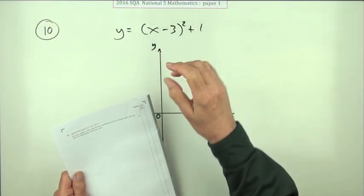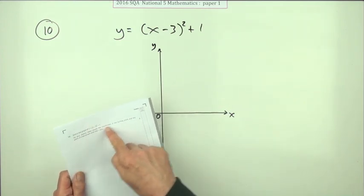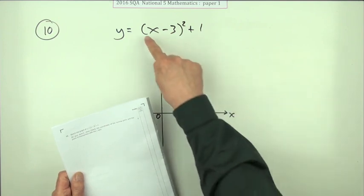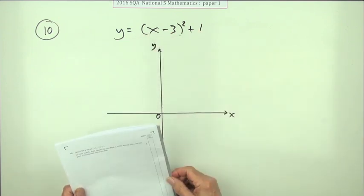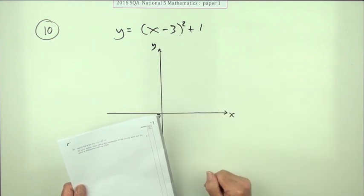Number 10 from paper 1 of the 2016 National 5. Here we go, a quadratic equation in completed square form, and it simply says sketch the graph of this, indicating all its important features - where's its turning point and where does it cross the axis.